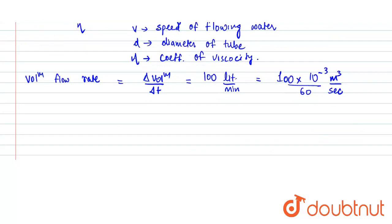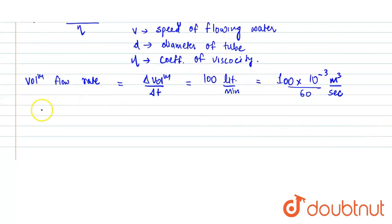Now the volume flow rate can also be written as area times flow speed equals ΔV/Δt. From here, the flow speed will be volume flow rate divided by area. So volume flow rate is (100 × 10⁻³)/60 meter cube per second